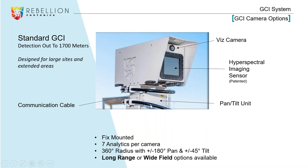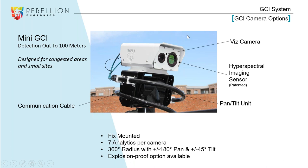The pan tilt unit allows the camera to turn 180 by 180 degrees — virtually 360 degrees — and tilt 45 degrees, so we can cover quite a large area. This is our mini camera, which weighs about 50 pounds but has the same camera technology — visual lens and hyperspectral camera — and can detect out to 100 meters. Because this one is usually used offshore or in explosion-proof areas, we have an explosion-proof option available for classified areas.